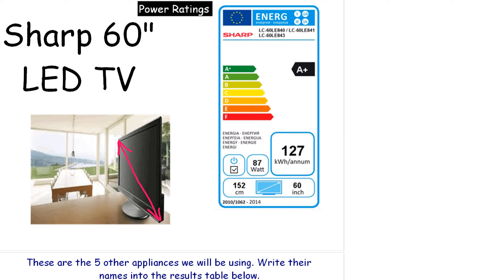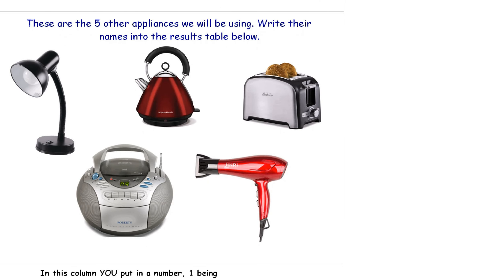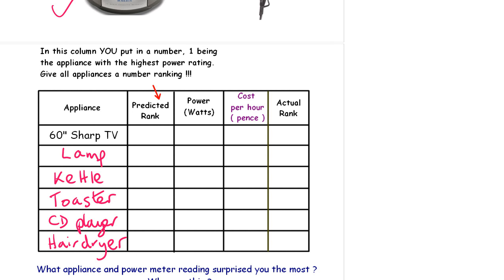These are the other appliances that we're going to be looking at. Top left going from left to right: lamp, kettle, toaster, CD player, hair dryer. Now this is what I would like you to do: put in those other five appliances into your table along here and then make your prediction.